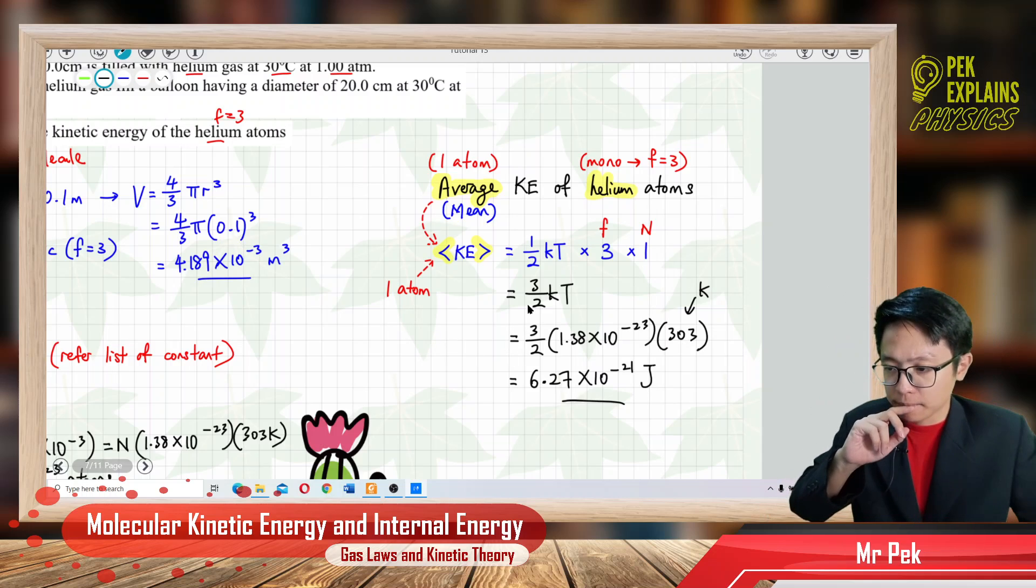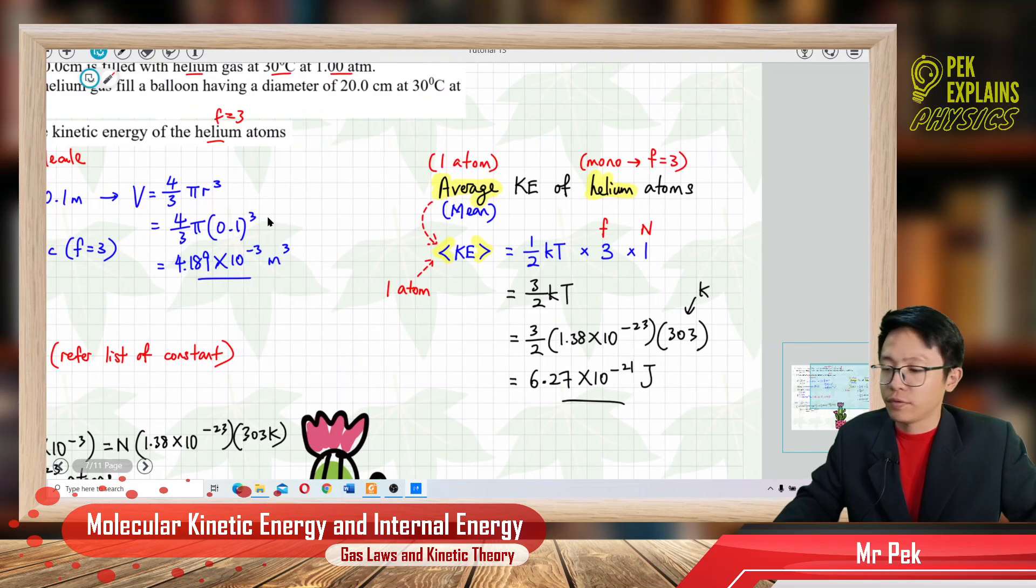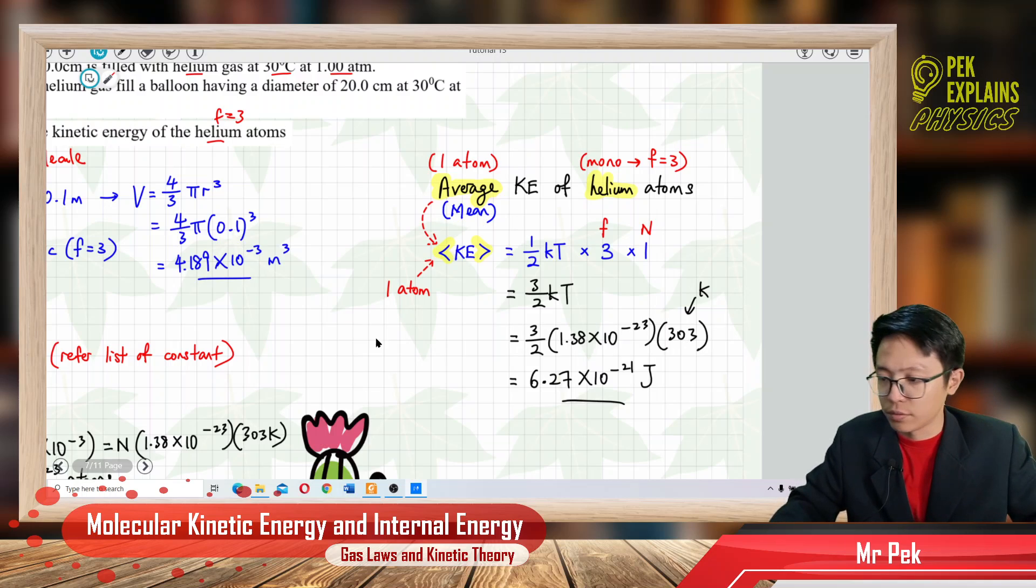That's it. The average kinetic energy of helium atom for only one atom. Monoatomic is always 3 degree freedom. That's for question 7. See you in the next video.